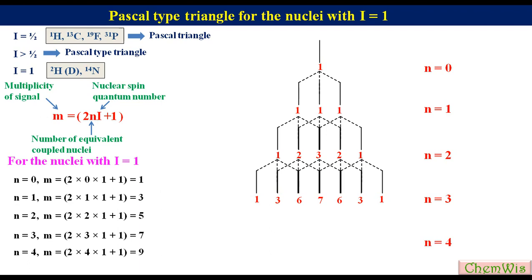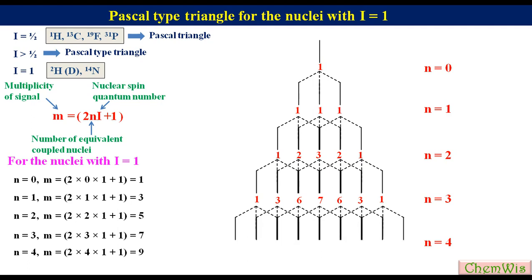Similarly, for n = 4, multiplicity will be 9. Each line in n = 3 will be split into 3 parts. The intensity ratio from the middle to left will be 19:16:10:4:1. So the overall intensity ratio will be 1:4:10:16:19:16:10:4:1.